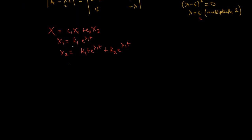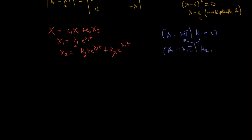Let's find k₁ and k₂. Here k₁ is the eigenvector corresponding to λ₁, derived from (A - λI)k₁ = 0. The k₁ in the x₂ formula is that same eigenvector. The generalized vector k₂ is then obtained from the equation (A - λI)k₂ = k₁. So finding x₁ requires first finding k₁.